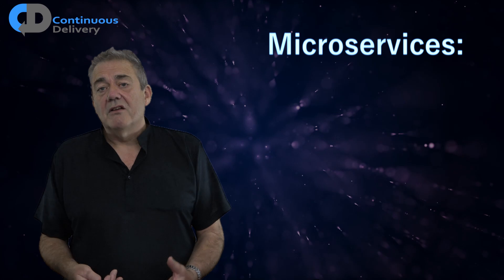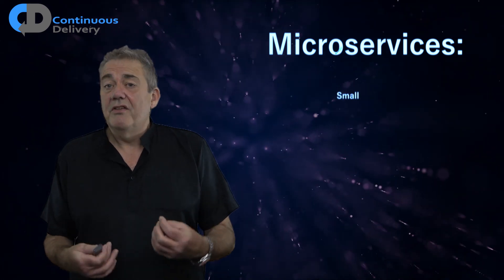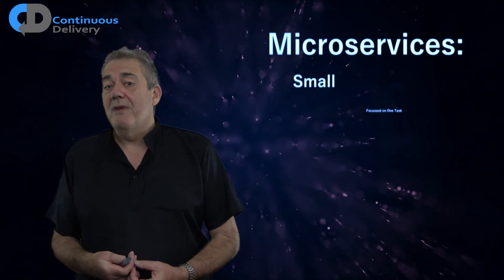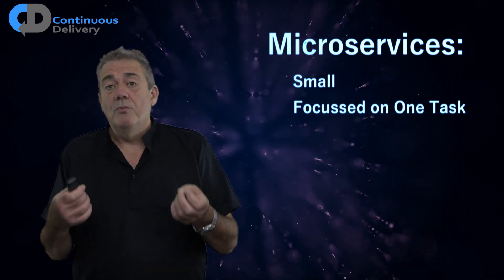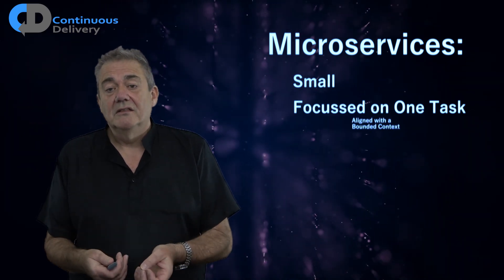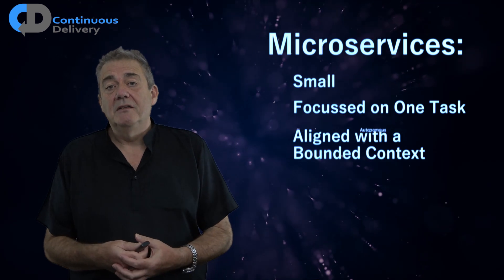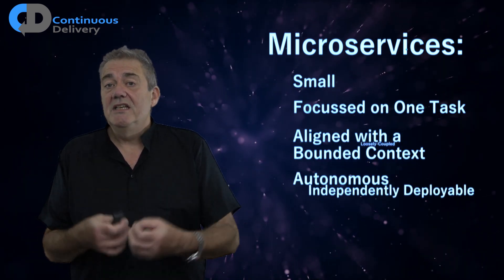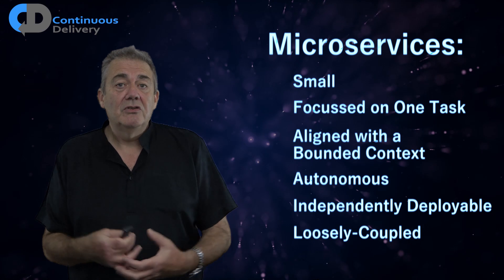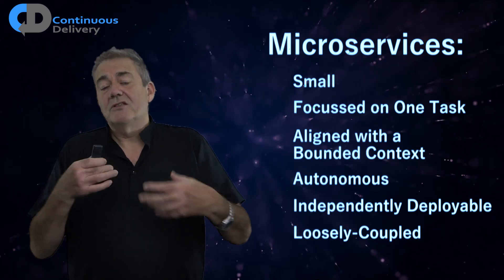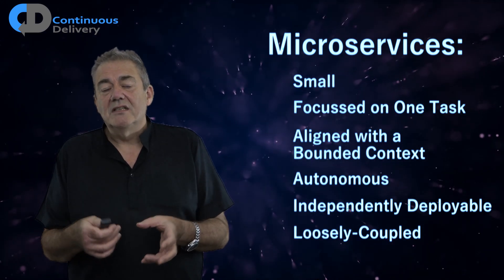Services as an organizing principle for software systems has a very long history. The defining characteristics of microservices are that they are small, focused on accomplishing one single task, aligned with a bounded context in the problem domain, autonomous, independently deployable, and loosely coupled. Let's talk about each of those ideas in a bit more detail.